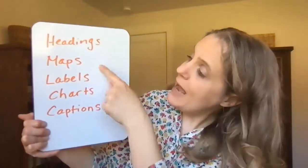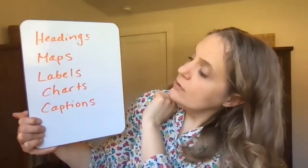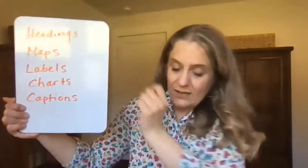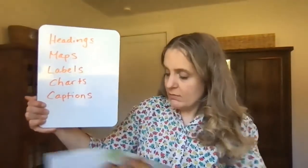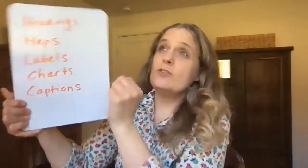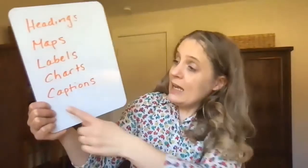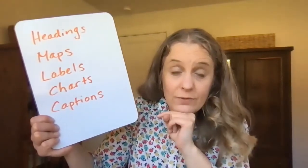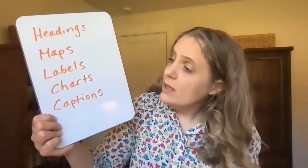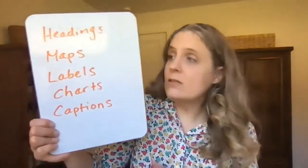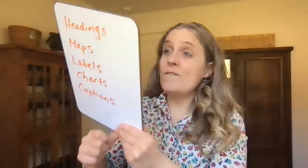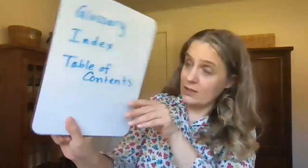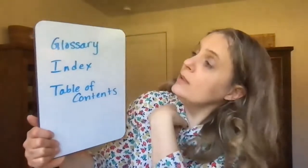It had headings, it had maps, it had labels. Charts — it does have some charts. Charts are sort of like another way to organize information. And captions — sometimes you'll see a photo in a nonfiction text, and then underneath it'll tell you more about that photo. That's a caption. So those are ones we've talked a lot about, and I wanted to talk to you about a few more nonfiction text features that you might not be as familiar with.